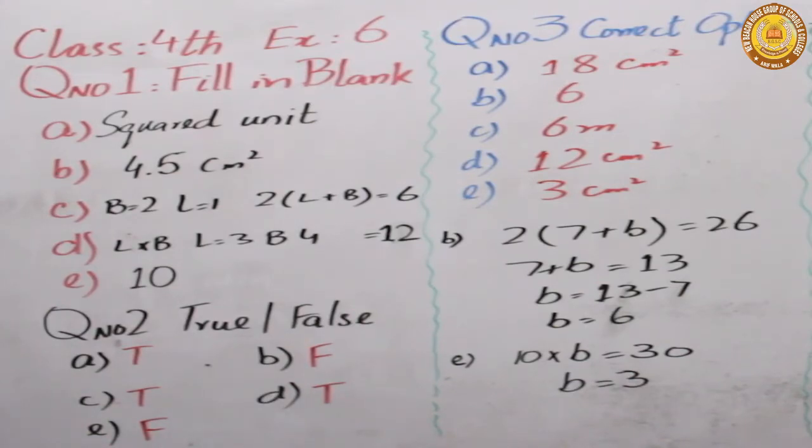Number two, true or false. First we say the amount of the surface shape covered its area. The area covered, the area. First option true.